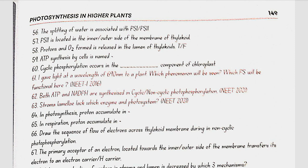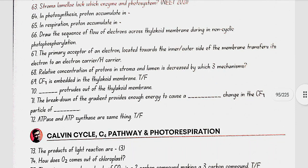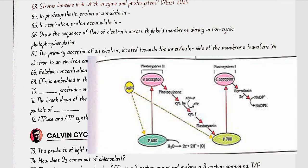In photosynthesis, protons accumulate in the lumen of the thylakoid. In respiration, protons accumulate in the intermembrane space of mitochondria. The electron flow follows the Z scheme during non-cyclic phosphorylation — a diagram of the Z scheme is referenced here.